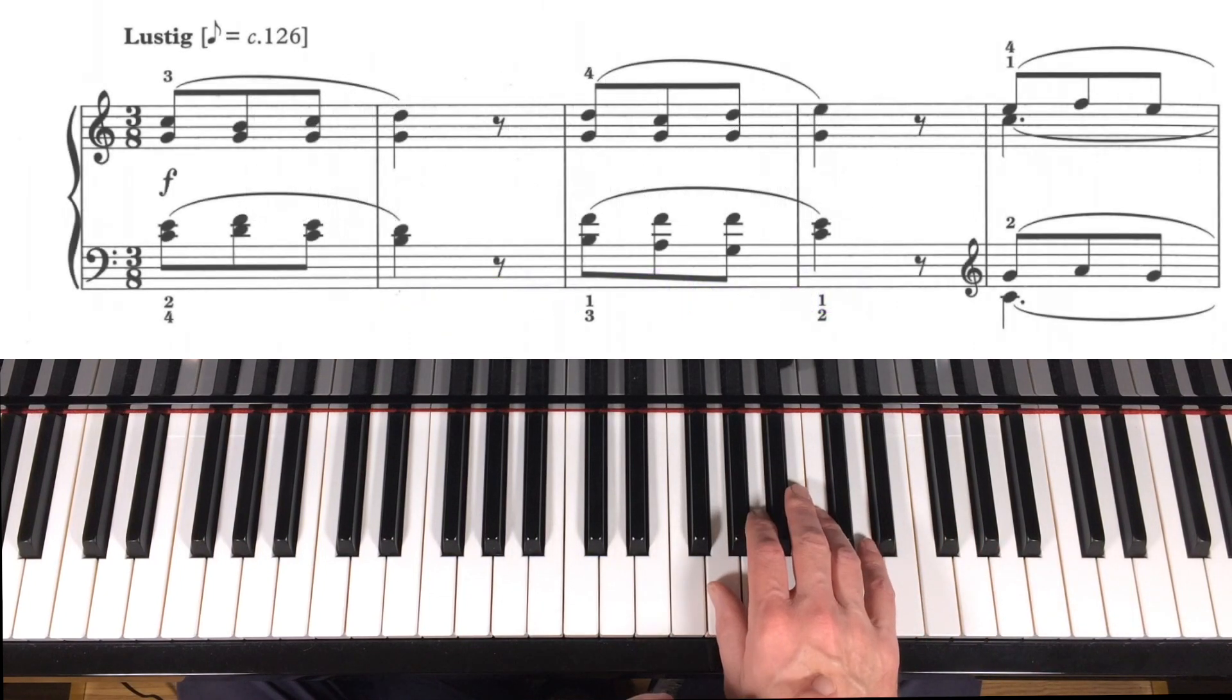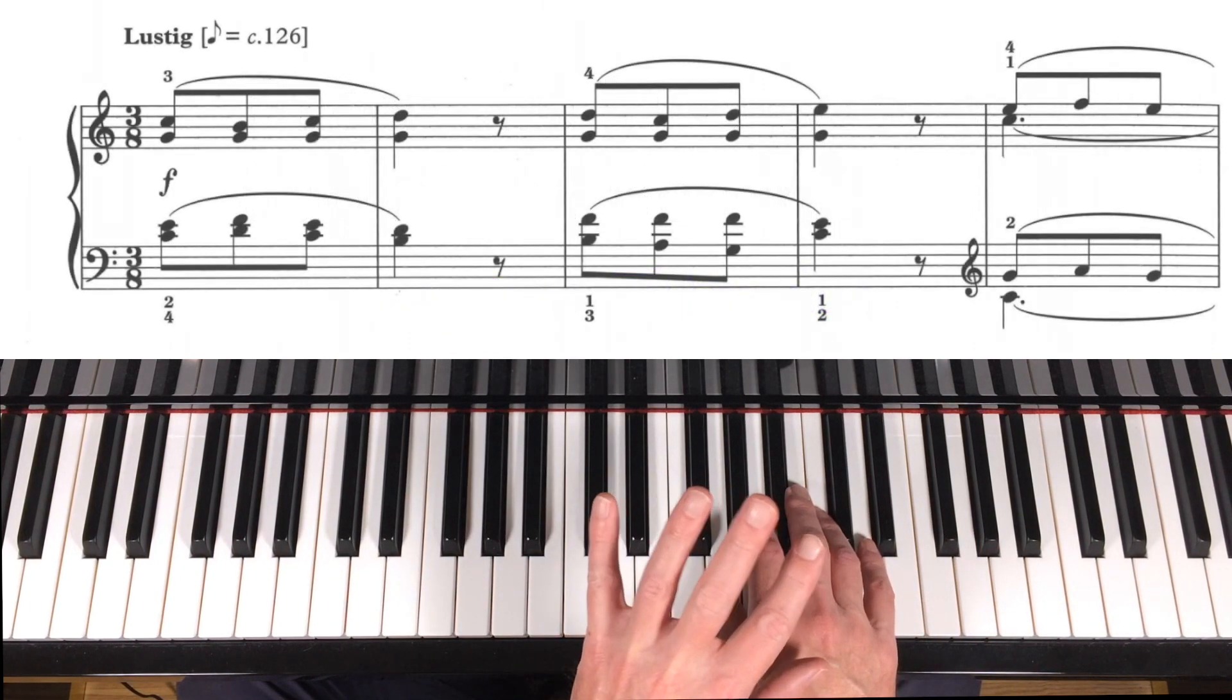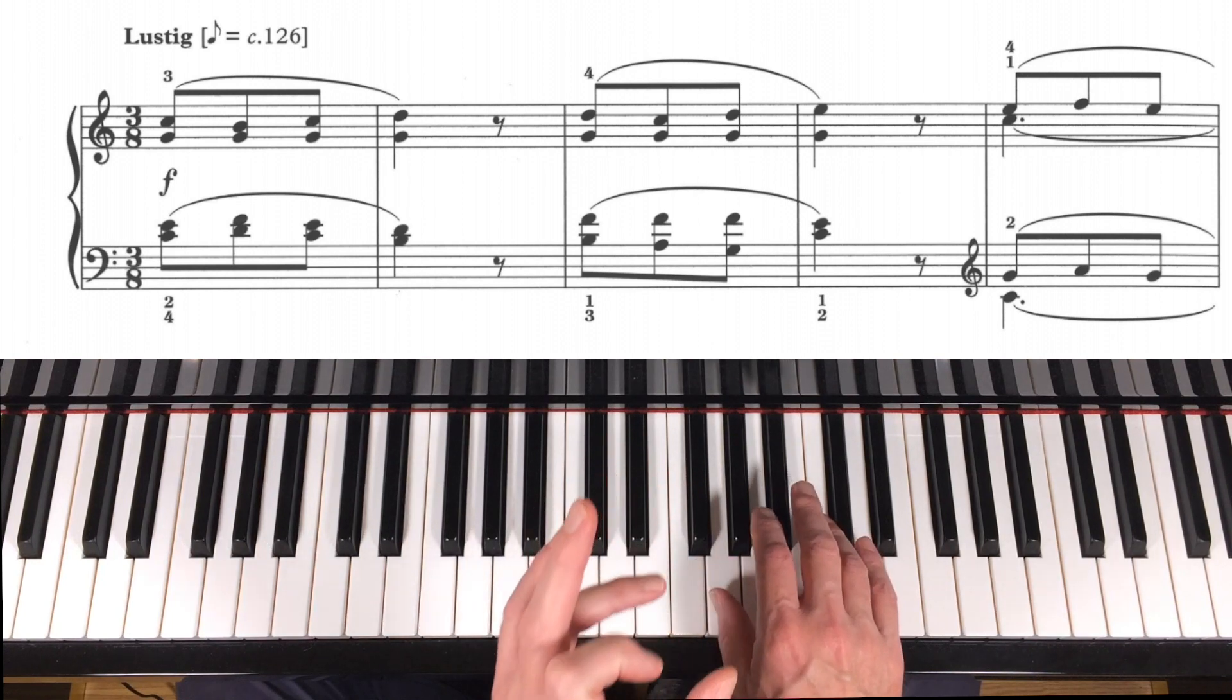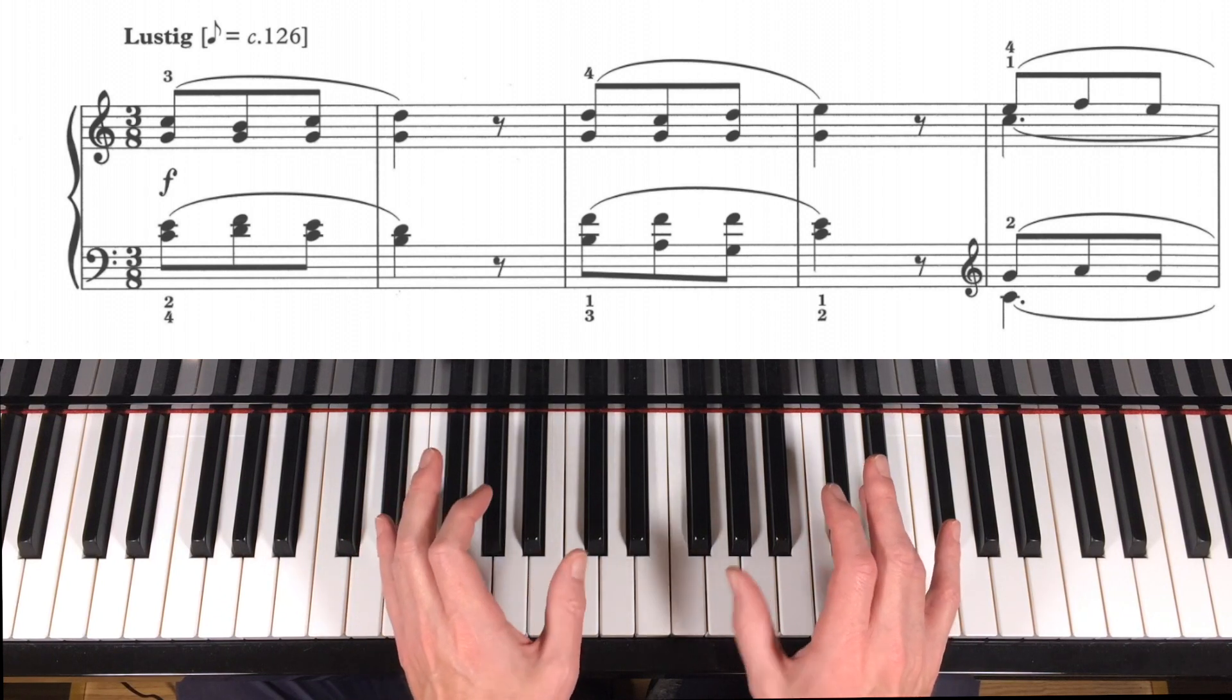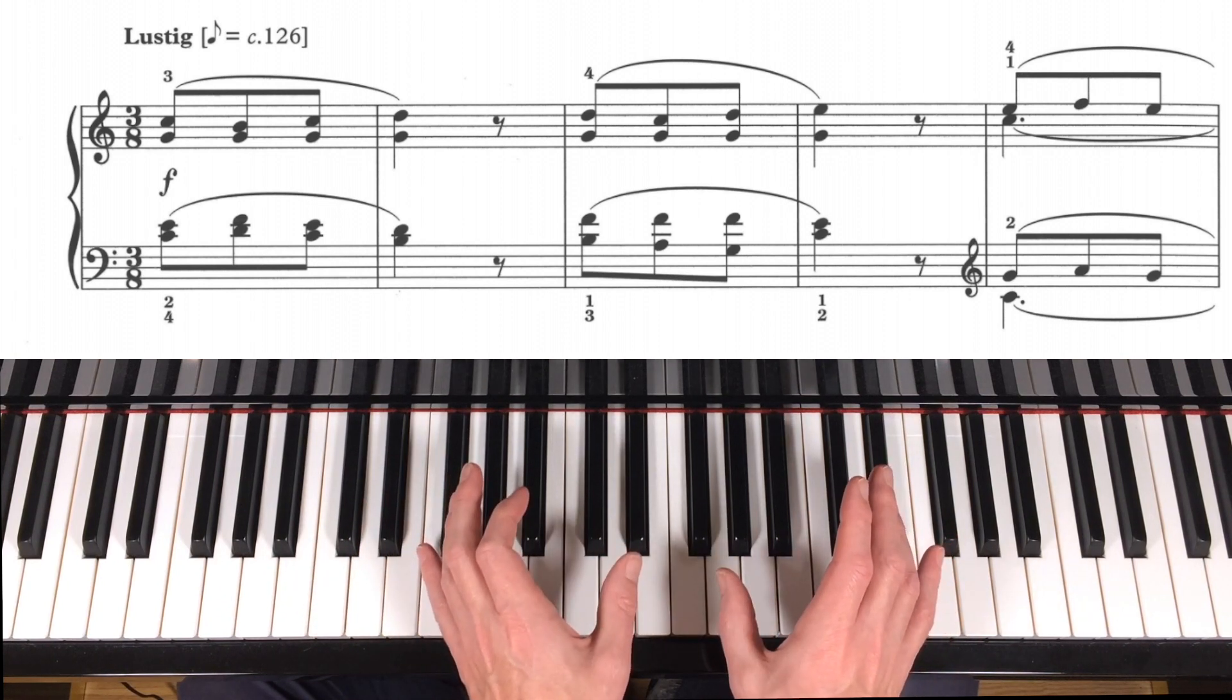The question is, in bars 3 and 4 and 7 and 8 especially, how do we keep that smooth legato line, especially when we have repeated notes?